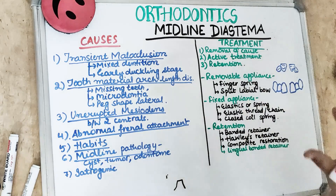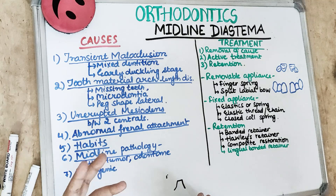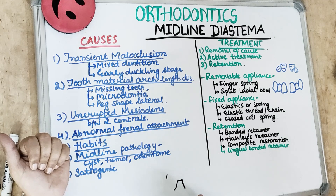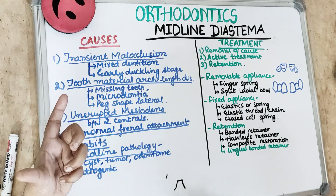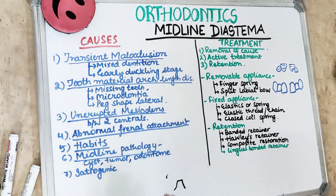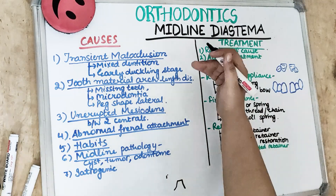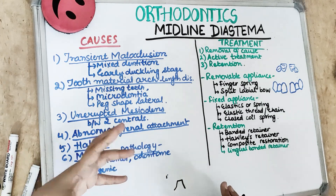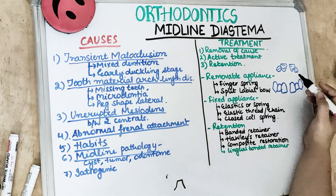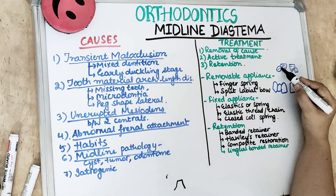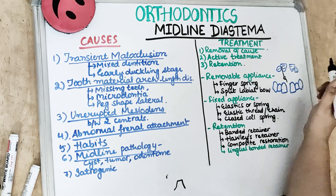The first phase of treatment is removing the cause or etiology. If any habit is present, give fixed or removable habit breaker appliances. If unerupted mesiodens are present, extract them. Perform frenectomy if a thick fleshy frenum is present. Any midline pathology should also be treated first. Once the cause is removed, start treatment using a removable or fixed orthodontic appliance. The removable appliance uses a finger spring, taken from the distal surface of the incisors — two finger springs are given to close the space.